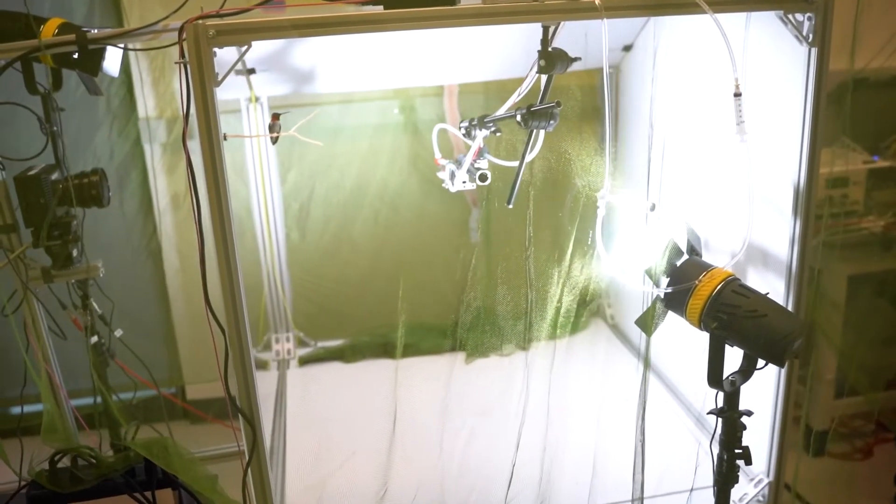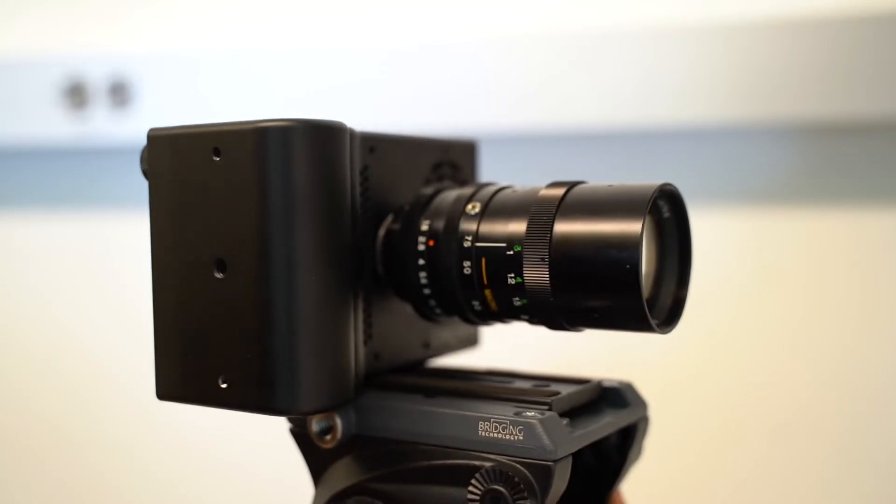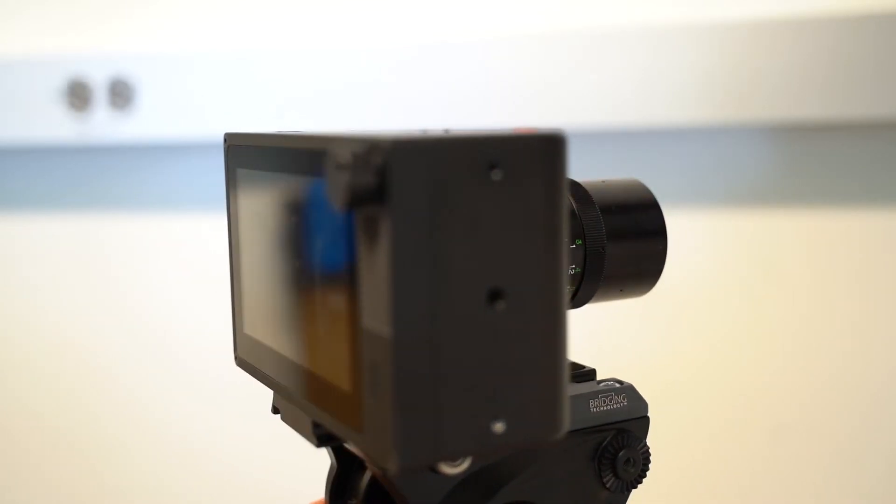This setup is nice because it's basically a cube with transparent walls. So you can see with high-speed cameras how the hummingbird is moving.